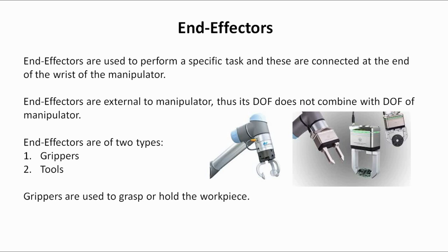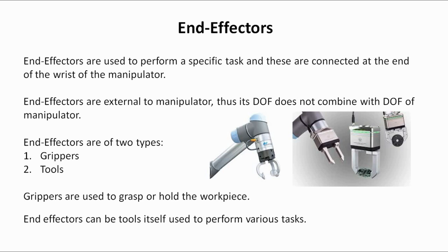End effectors are of two types. The first type is grippers — grippers are used to grasp or hold the workpiece or tools. The second type of end effector is the tool itself, which can be used to perform various tasks like welding, drilling, grinding, etc.